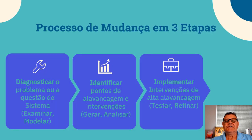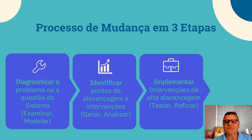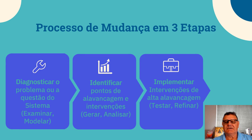We're going to use a three-step change process: diagnose, identify, implement. We diagnose our system — we examine it, we model it using tools you've already used, the iceberg and various other tools. I'm going to teach you about the connection circle tool, which helps you identify where to start when you want to intervene in a system. Then we identify the leverage point based on our connection circle, figure out where we can intervene. Then we implement — we experiment, test, and assess a high leverage intervention.